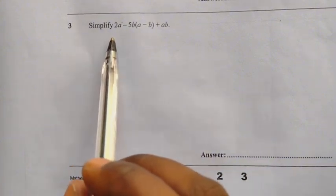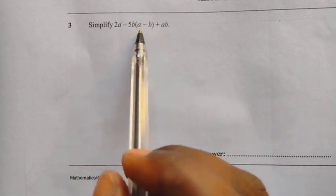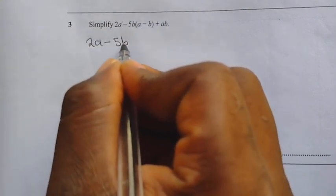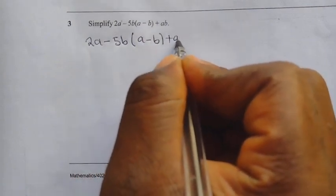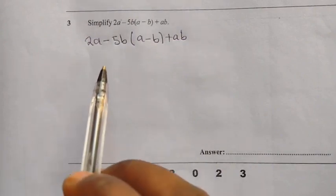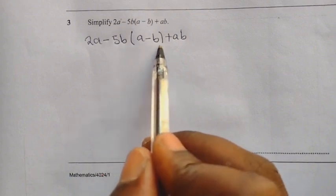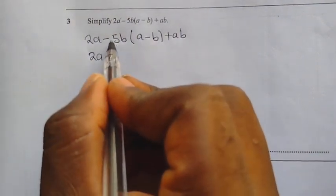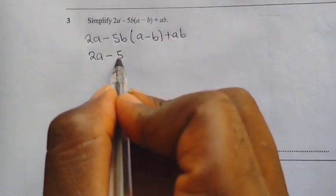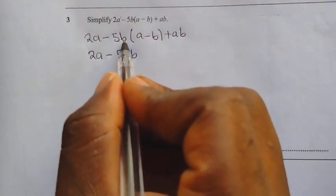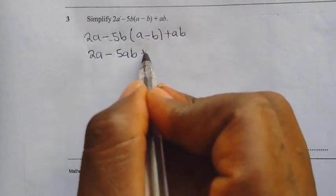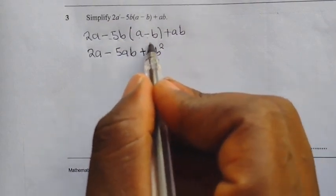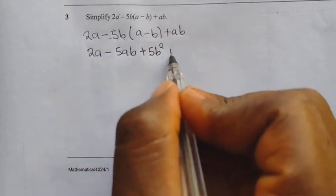We come to question 3: simplify 2a minus 5b in brackets, a minus b, plus ab. We write the question: 2a minus 5b open bracket, a minus b, then plus ab. Since we have brackets, we need to open them by multiplying with negative 5b. So: 2a minus, then minus 5b times a gives minus 5ab; then minus 5b times minus b — minus times minus is positive — giving plus 5b squared. Then we add the plus ab.